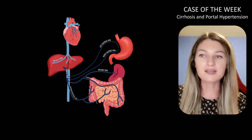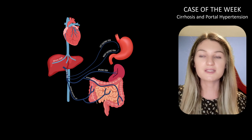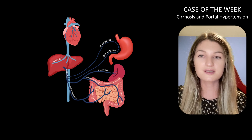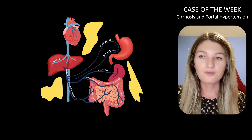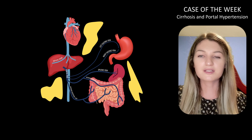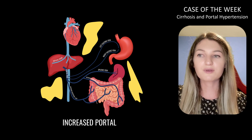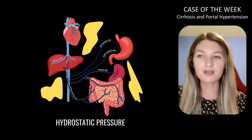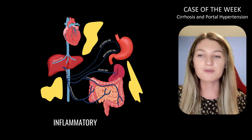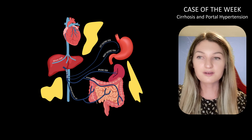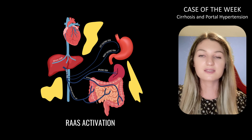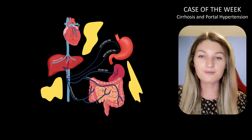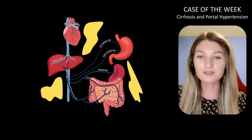Our patient did not have ascites, but this is another common manifestation of portal hypertension on CT, appearing as hypodense fluid in the peritoneal cavity. Elevated portal venous pressure causes a hydrostatic pressure imbalance and release of inflammatory mediators such as nitric oxide, leading to arterial dilatation and activation of the renin-angiotensin-aldosterone system, thus causing the body to retain more sodium and in turn more water.